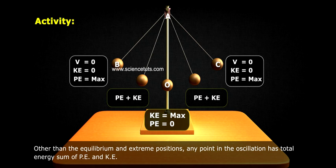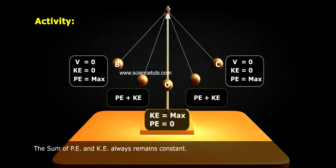Other than the equilibrium and extreme positions, any point in the oscillation has total energy as the sum of PE and KE. The sum of PE and KE always remains constant.